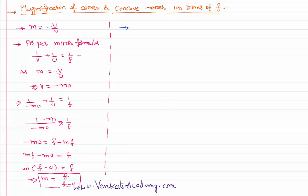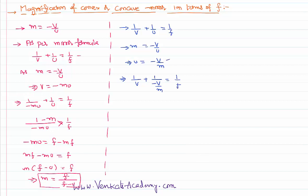Starting again with the mirror formula: 1 by v plus 1 by u equals 1 by f. I also know the magnification formula m equals minus v by u. Now I want to eliminate u, so I write u as minus v by m. Substituting into the mirror formula: 1 by v plus (minus m by v) equals 1 by f. So 1 by v times (1 minus m) equals 1 by f.